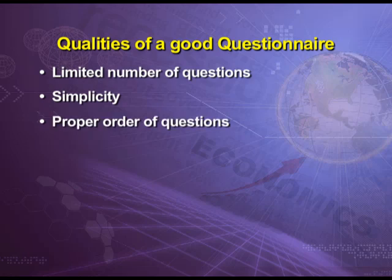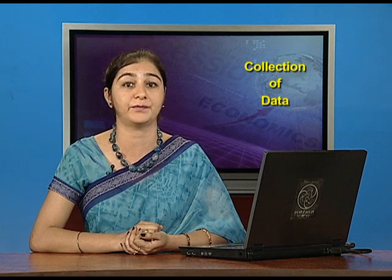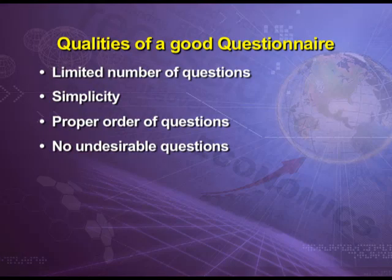The second point is simplicity — the questionnaire must be very simple, easy, and lucid, and the language of questions must be simple and attractive. The third point is proper order of questions — the sequence of questions must be properly arranged. For example, before asking about the annual or monthly income of a respondent, we should first know whether that person is employed or unemployed.